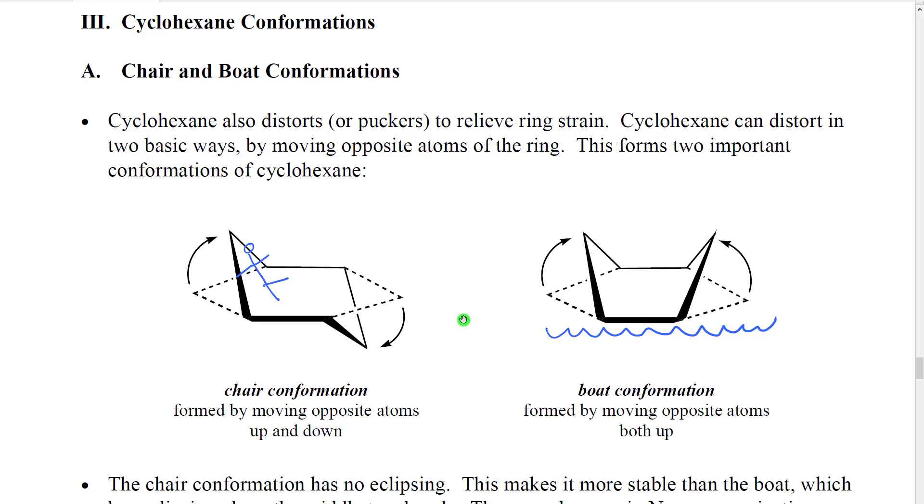This has been called the chair conformation. If you imagine this is sort of like the back of the chair, here's the seat, and then here's the legs. I sort of drew a stick figure sitting in it. So that would be having the two ends move in opposite directions.